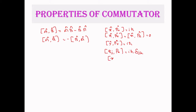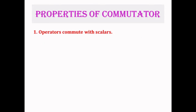You can also calculate the value of commutator brackets [x,y], [x,z], or [y,z], and the values of these commutator brackets are 0. In general, [qj, qk] = 0. The first property is that operators commute with scalars, so [A, b] = 0 for any scalar b.